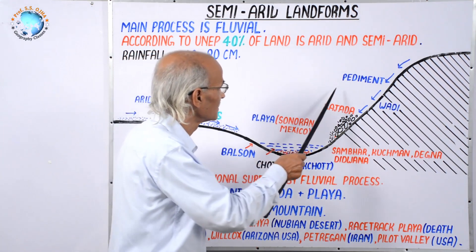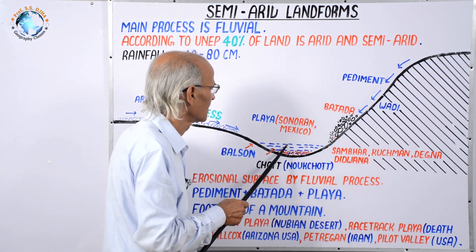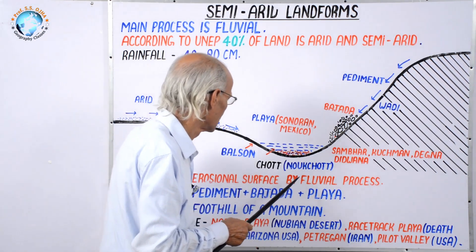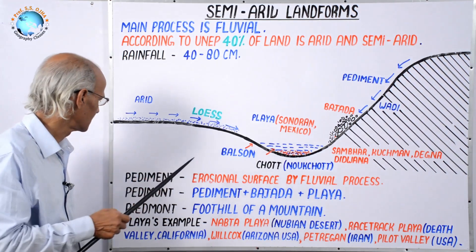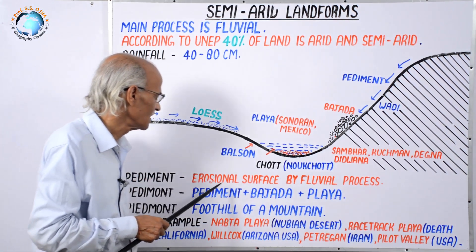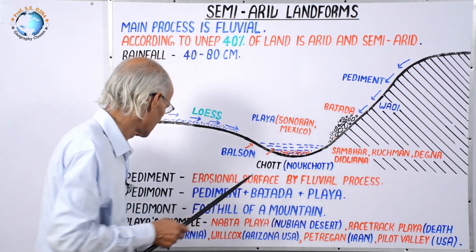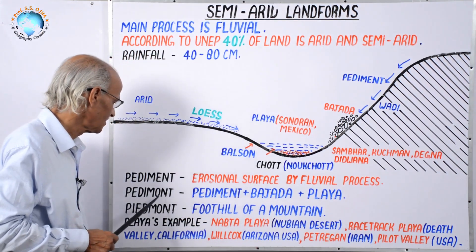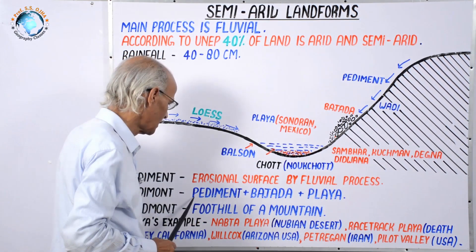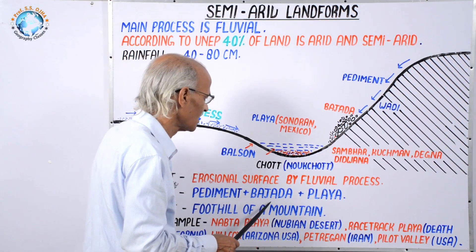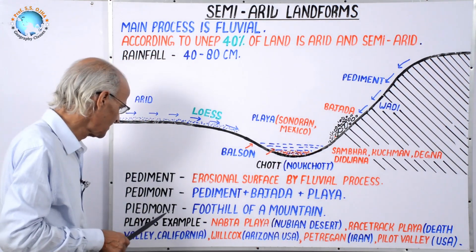To recap, we are now aware of pediment, bajada, balsan, playa, chaat, and Nouakchott. Pediment is an erosional surface by fluvial process in semi-arid regions. Pediplain includes pediment plus bajada plus playa — these three collectively form a pediplain.